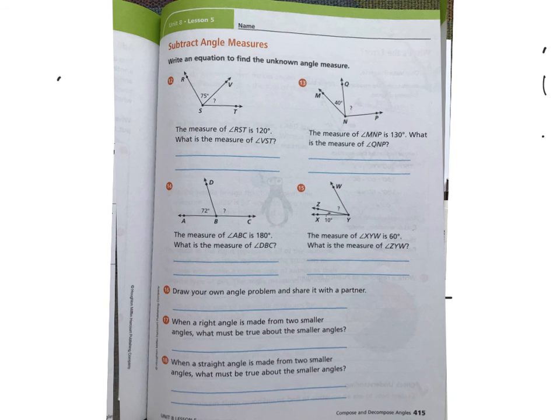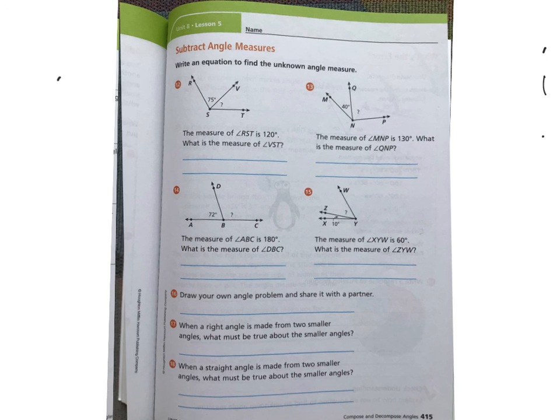Alright. Last page for today. And we are only going to do number 12, 13, and 14. I'm going to say that number 15 is extra credit if you would like. This one's going to be extra credit and we are not doing the bottom section. This time we're going to be subtracting angle measures because we have an unknown angle. You're going to see that we have a question mark on each one. So we need to figure out what that angle is.